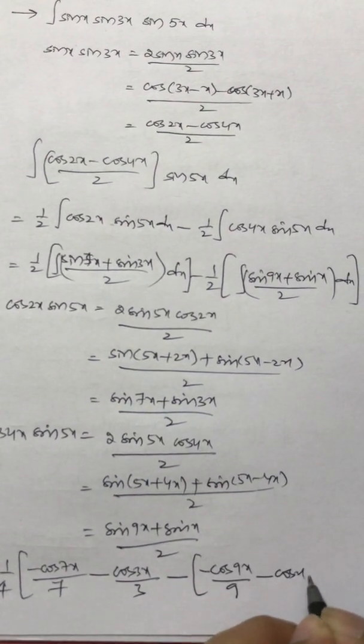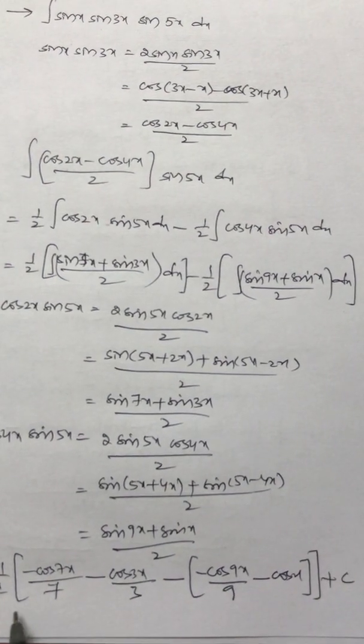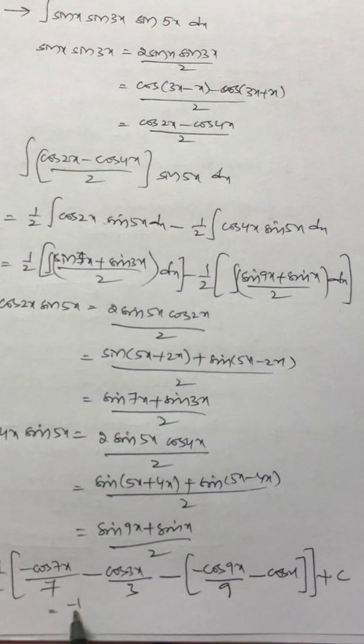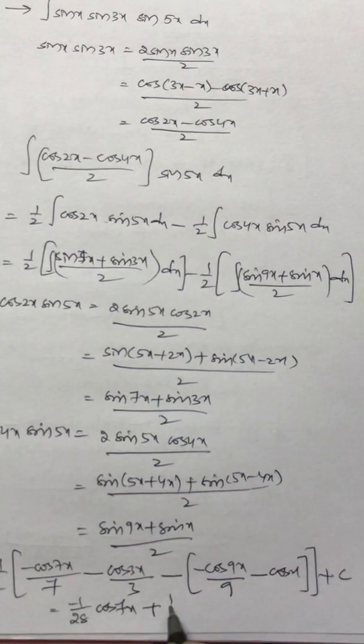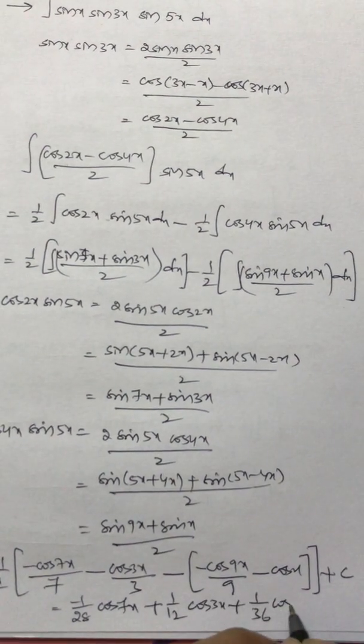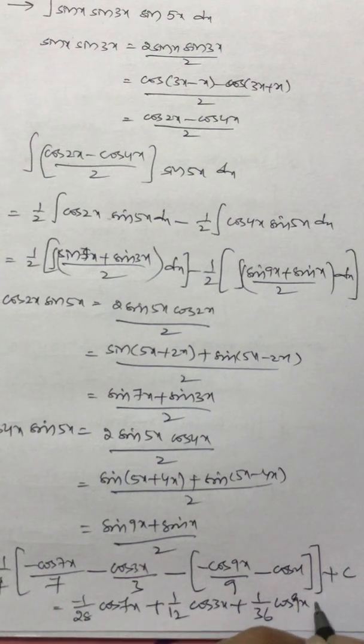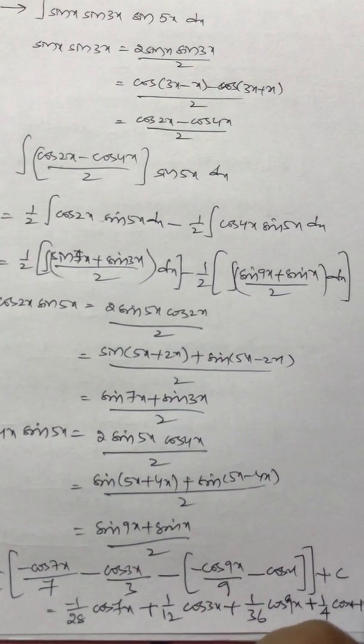So the final answer will be minus 1 by 28 cos 7x plus 1 by 12 cos 3x plus 1 by 36 cos 9x plus 1 by 4 cos x plus c.